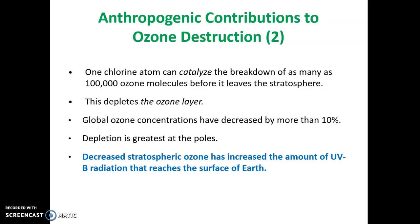This results in a depletion of the ozone layer and the creation of what we refer to as holes. Globally, ozone concentrations have decreased by more than 10%, and the depletion is greatest at the poles. There are chemical reasons for this — involving ice molecules interacting differently — which is why we see greater depletion at the poles.